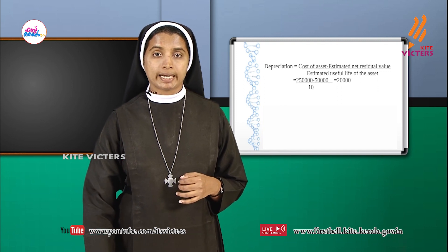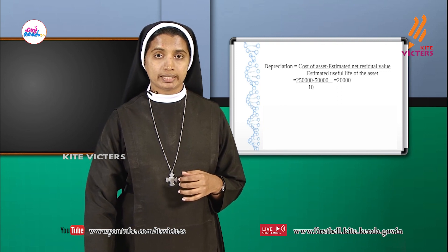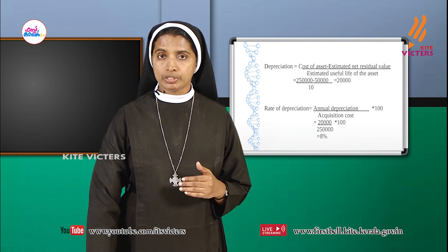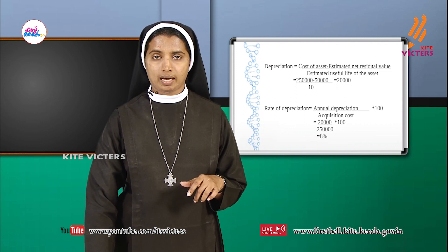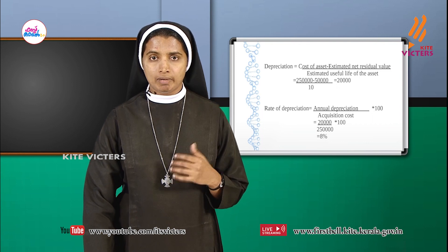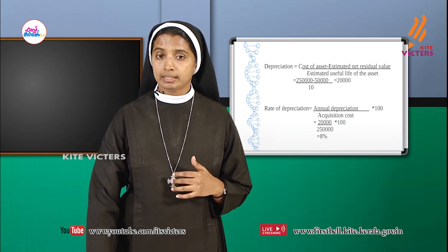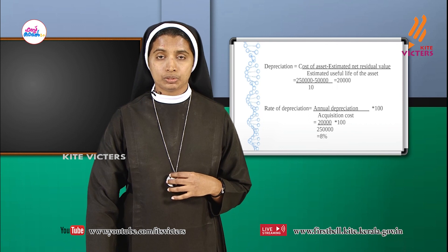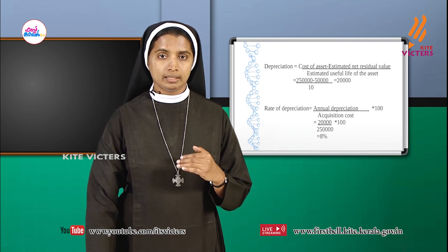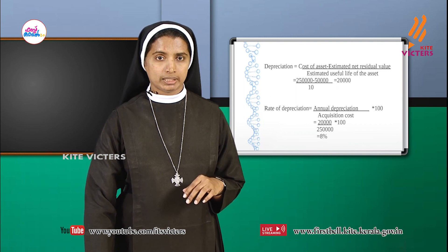We can also calculate the rate of depreciation. The formula is: annual depreciation divided by acquisition cost, multiplied by 100. Annual depreciation is ₹20,000. So rate = 20,000 ÷ 2,50,000 × 100 = 8%.